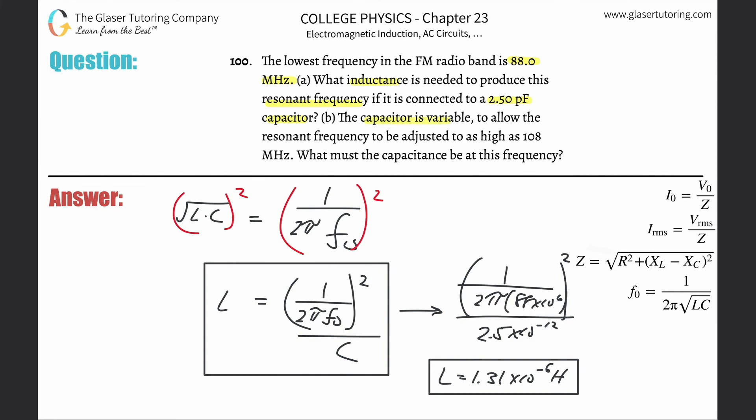The capacitor is variable to allow the resonant frequency to be adjusted as high as 108 megahertz. What must the capacitance be at this frequency? All right, so what they're saying now is that the inductor is fixed. So we're basically going to do the problem out again. So instead what's going to happen, remember how we divided out the capacitance? In this case, we're going to divide out the inductance now. So that's going to be the new formula.